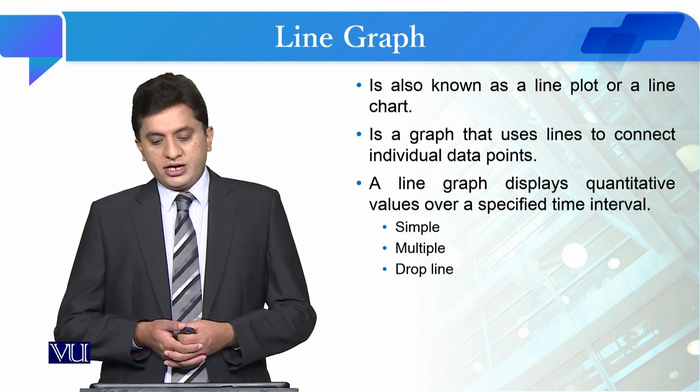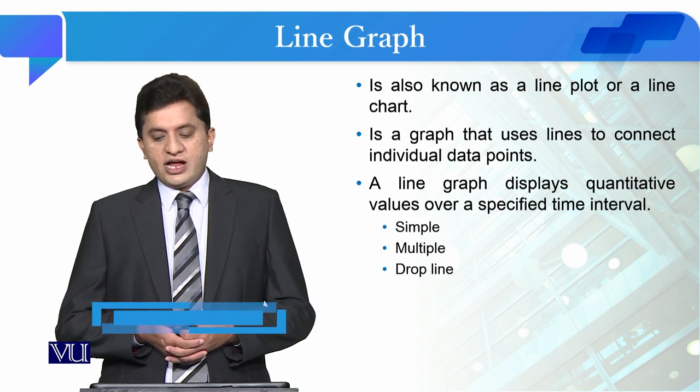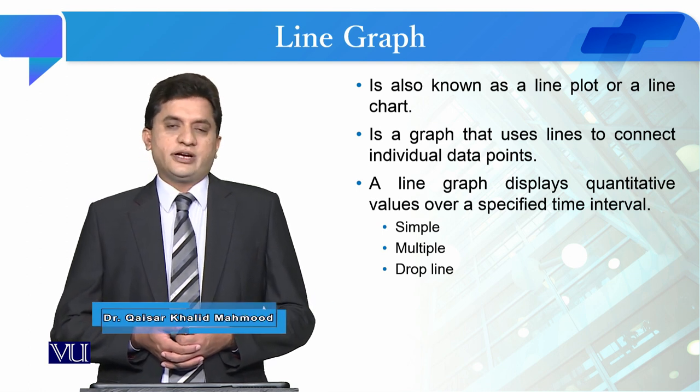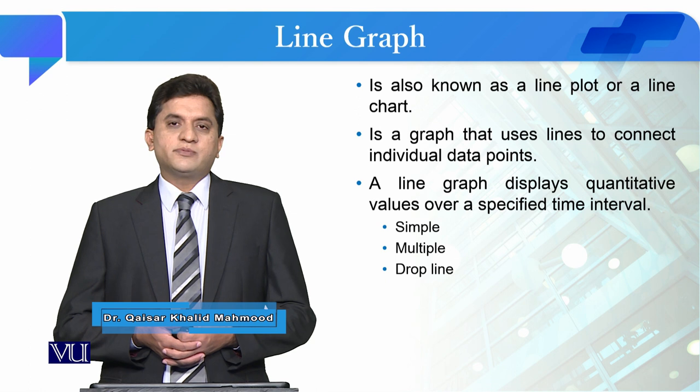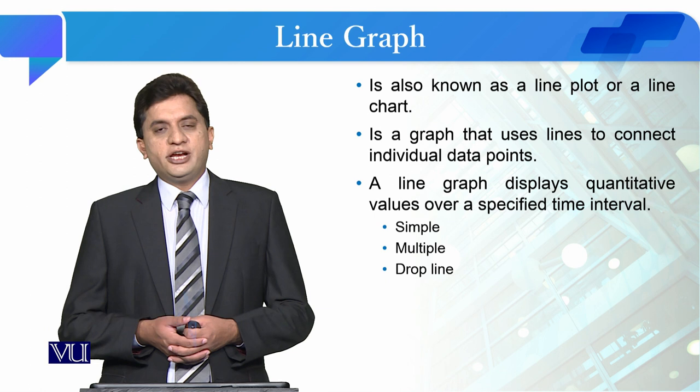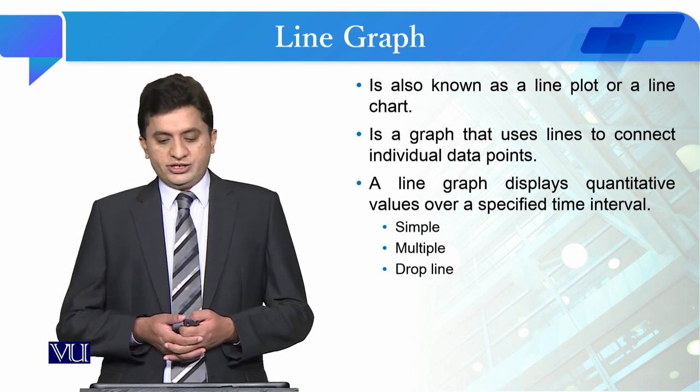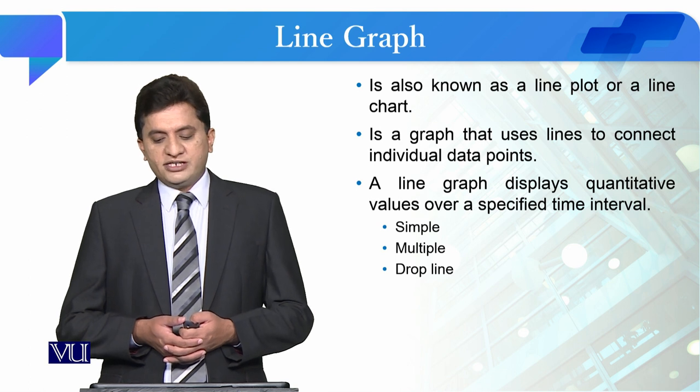A line graph is also known as a line plot or a line chart. It is a graph that uses lines to connect individual data points. Instead of making bars, you just connect the data points to make a line. A line graph displays quantitative values over a specified time interval.